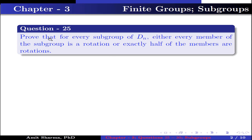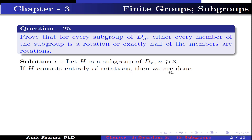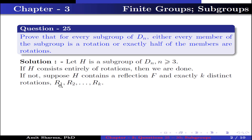Question number 25: prove that for every subgroup of Dₙ, either every member of the subgroup is a rotation or exactly half of the members are rotations. Let H be a subgroup of Dₙ where n ≥ 3. If H consists entirely of rotations, then we are done. If not, suppose H contains a reflection f and exactly k distinct rotations, say r₁, r₂, up to rₖ.